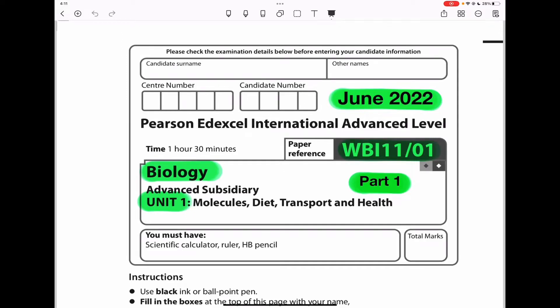Welcome to the Chemistry, Biology, and Math Revision Hub. Today we are doing the Pearson Edexcel International GCSE Biology Unit 1 for June 2022. I will do this paper in two parts and I will put the link to the second part video below the description box of this video. Let us begin.